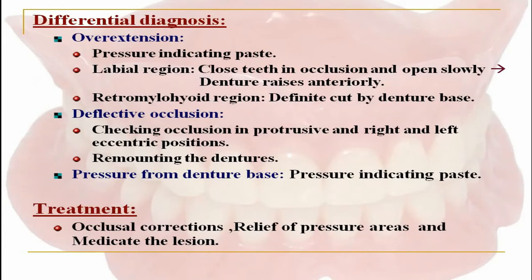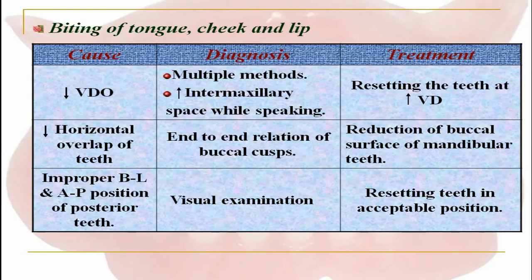For differential diagnosis: overextension can be checked with pressure indicating paste in the labial region; close teeth in occlusion and open slowly, then the denture raises anteriorly. In the retromylohyoid region, a definitive cut by the denture base will be seen. For deflective occlusion, checking occlusion in protrusive and right and left eccentric positions and remounting is necessary. Pressure from the denture base is identified using pressure indicating paste. Treatment involves occlusal corrections, relief of pressure areas, and medicating the lesion.